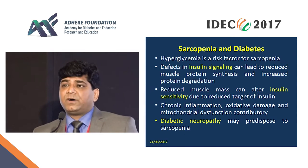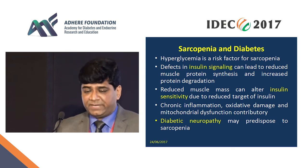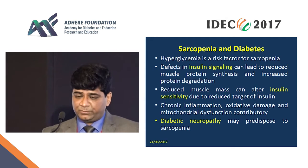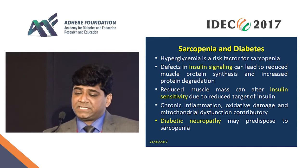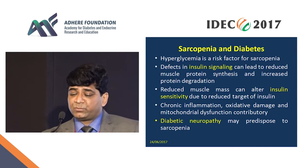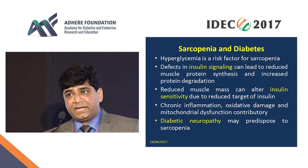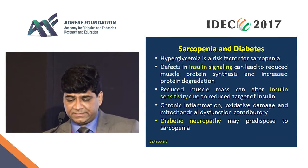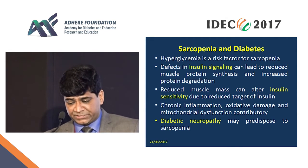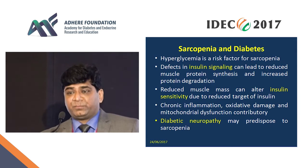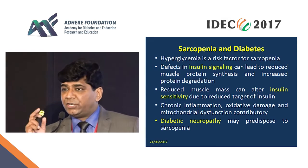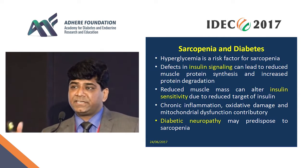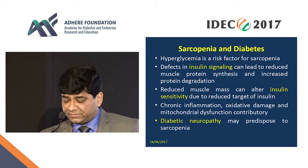Regarding sarcopenia's role in the development of diabetes: hyperglycemia itself can be a risk factor for sarcopenia, because defective insulin signaling leads to decreased protein synthesis and decreased muscle mass, which further reduces insulin sensitivity — so it goes both ways. Chronic inflammation and oxidative damage also contribute. Additionally, diabetic neuropathy causes damage to the neuromuscular junction, which may predispose individuals to the development of sarcopenia.